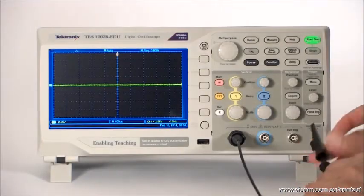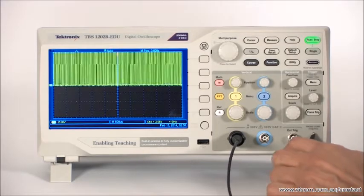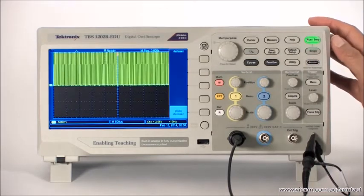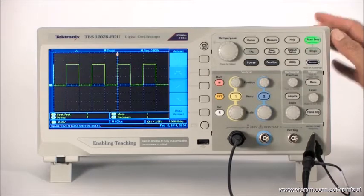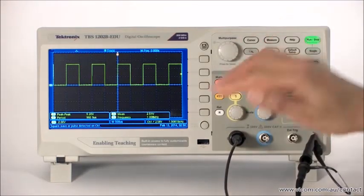For this video, we'll make measurements on the calibration output of the scope. To get a stable waveform, I'll use the Autoset function, which also performs a series of automatic measurements as soon as it finishes analyzing the waveform. We'll talk more about automatic measurements later.